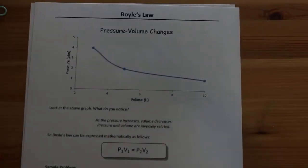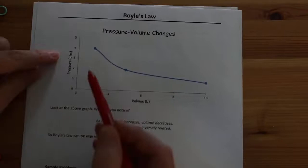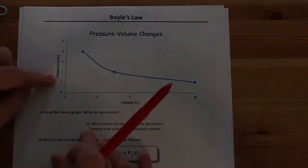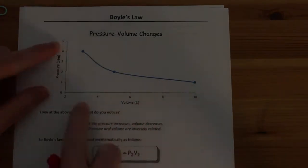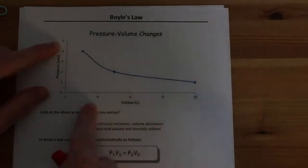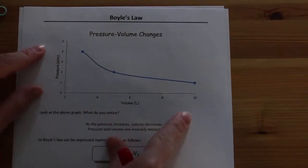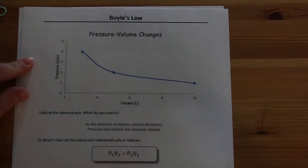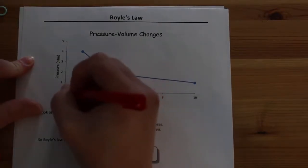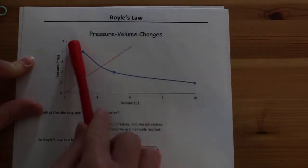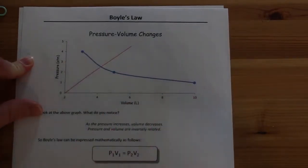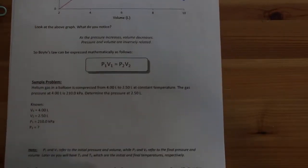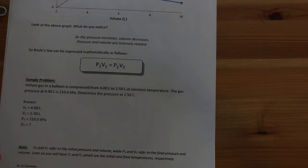If we were to plot pressure against volume, it gives us a downward sloping curve, because as pressure increases along the y-axis, volume does the opposite. If pressure and volume were directly proportional — both going up or both going down — it would have a shape like a straight line going up. But because of the inversely proportional relationship, we get that downward sloping curve. And again, the equation is P1V1 equals P2V2.